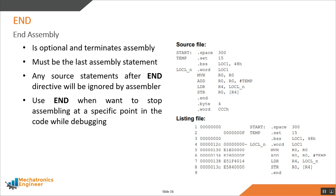The END directive is an optional assembler directive used to terminate an assembly language source file. It must be the last assembly statement, because any source statement after it will be ignored by the assembler. As shown in the source file, when the END directive is used, the next two statements are not counted in the listing file. This directive is also helpful in debugging, as you can use it wherever you want to stop the assembly.